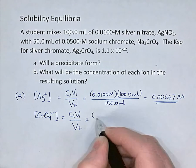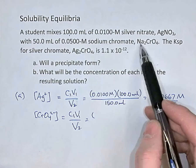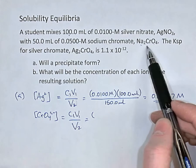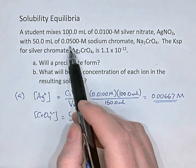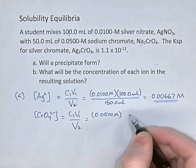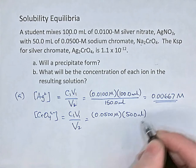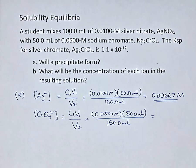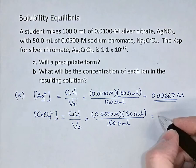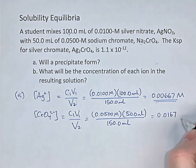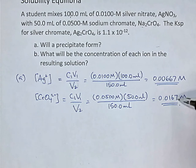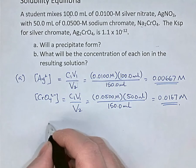Now for chromate: its original concentration from 0.05 molar sodium chromate — there's only one chromate per formula unit, so chromate's initial concentration is 0.0500 molar. Its volume was 50 milliliters, and total volume is 150 milliliters. So 0.05 × 50 / 150 = 0.0167 molar. Now we have both ion concentrations. At 0.0167 molar, it's looking quite likely there will be a precipitate, but let's actually find out by calculating QSP.